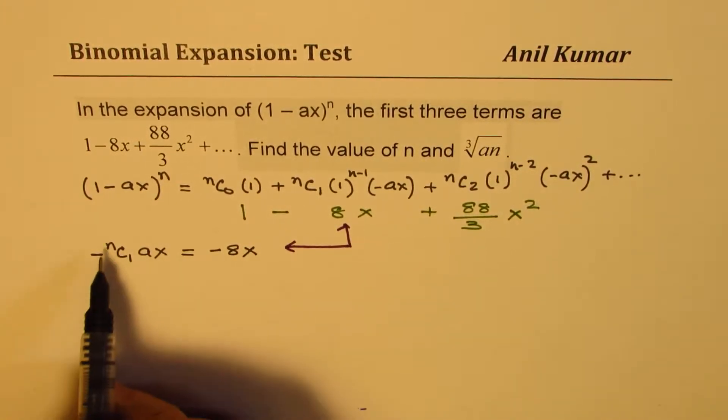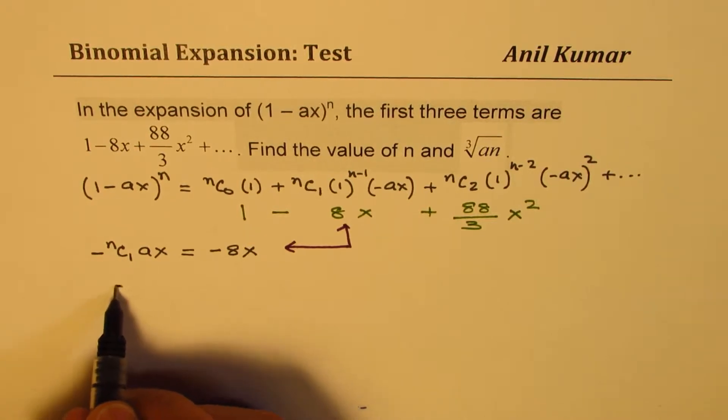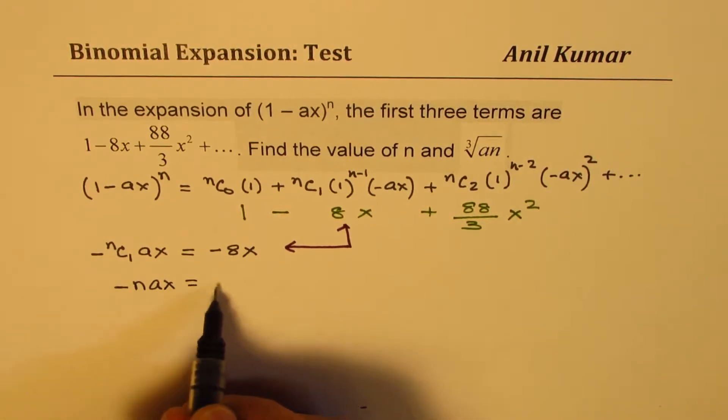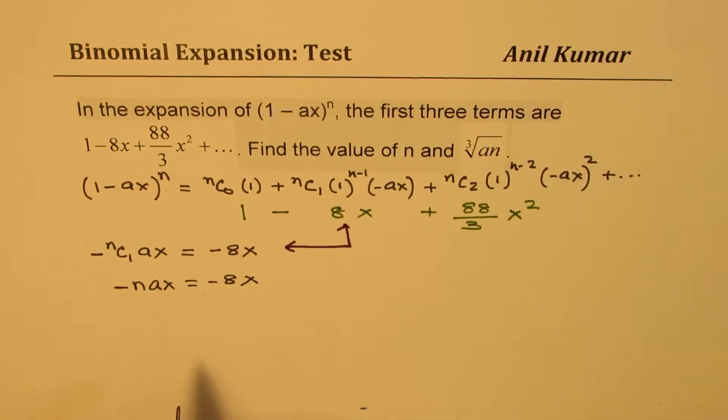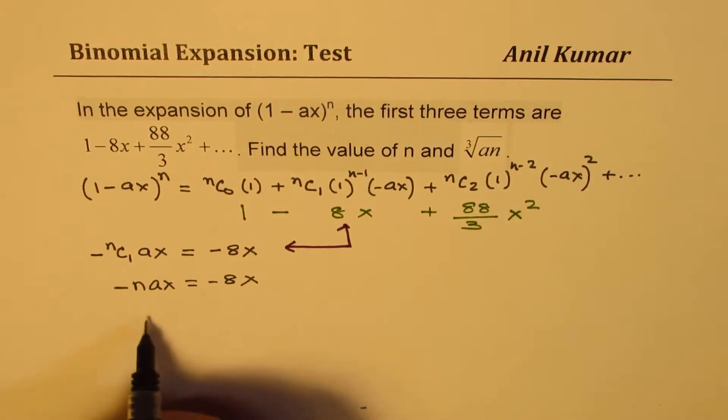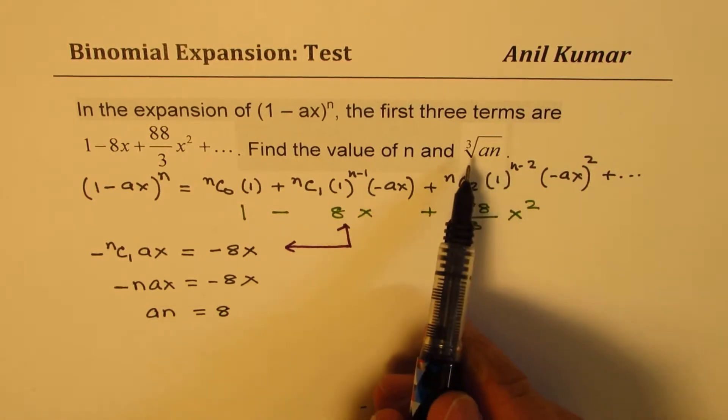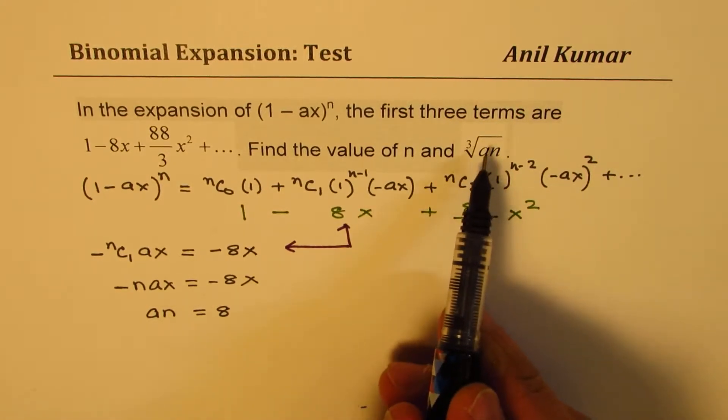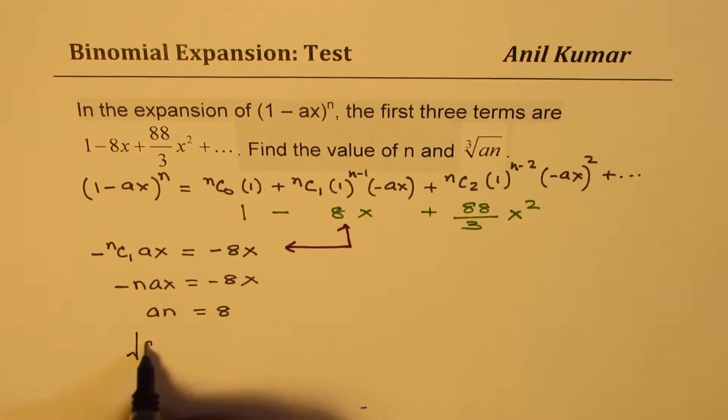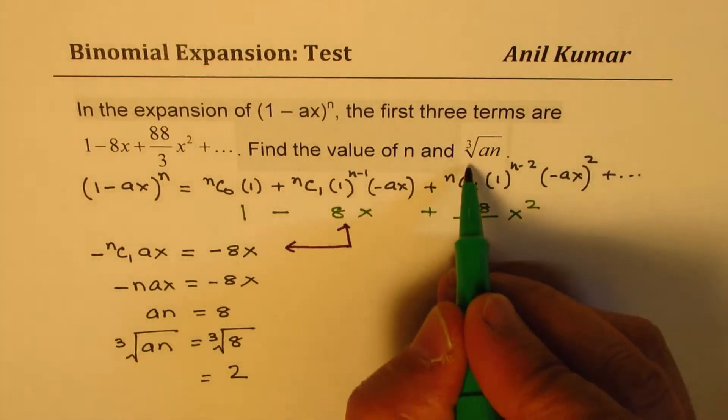From here, the negatives cancel, so we get An = 8. We need to find the cube root of An, so the cube root of An equals the cube root of 8, which equals 2. So we have the solution of one part.